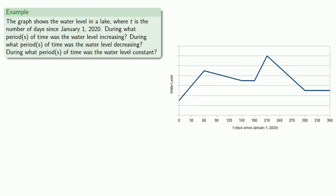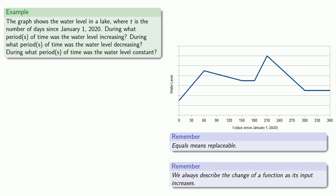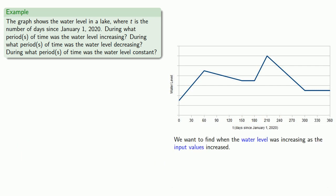Consider this example: the graph shows the water level in a lake where t is the number of days since January 1, 2020. We want to find the period of time when the water level was increasing, decreasing, and constant. There are two important things to remember: equals means replaceable. So we want to find when the water level was increasing as the input values increased. Our water level is the function, and equals means replaceable, so we can replace water level with function.